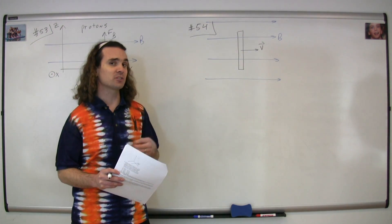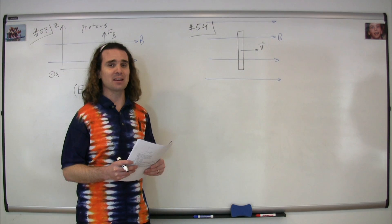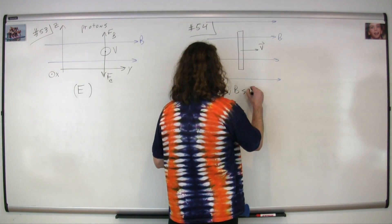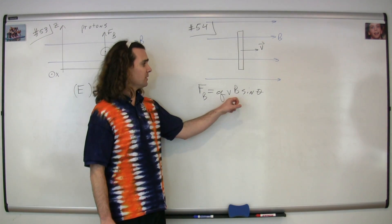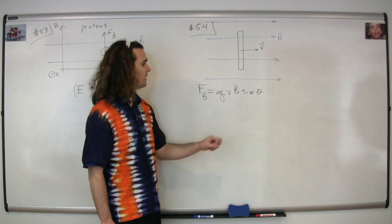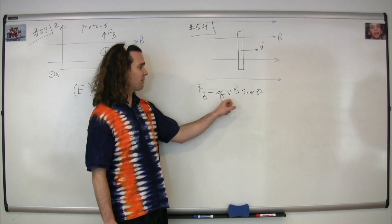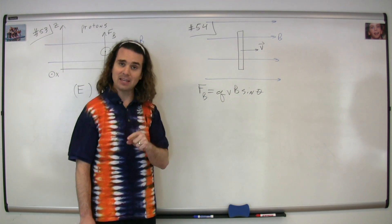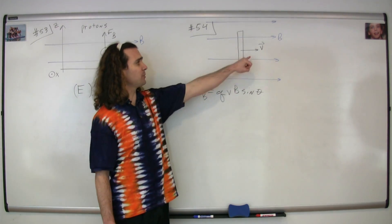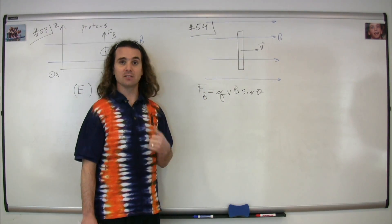And the equation for the magnetic force on a charged particle moving in a magnetic field is the charge times the velocity of the charged particle, times the magnetic field it's moving through, times the sine of the angle between the velocity and the magnetic field. And yes, in this particular case, the angle between the velocity and the magnetic field is zero.